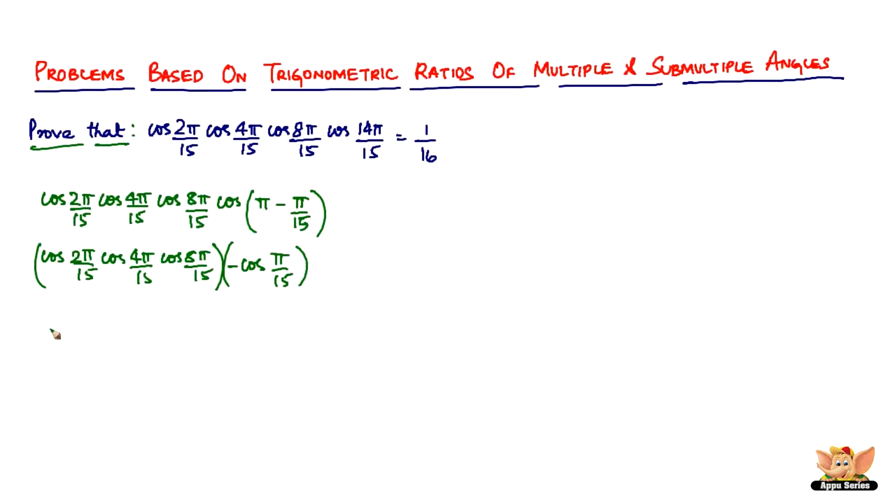So now let's just rearrange and write this as minus of cos π by 15 times cos 2π by 15 times cos 4π by 15 times cos 8π by 15.